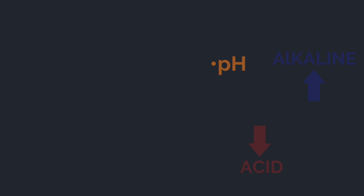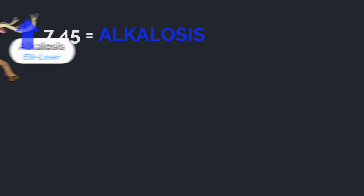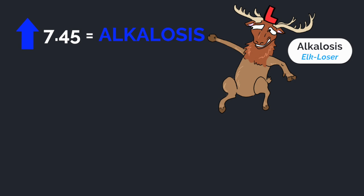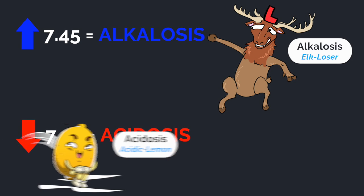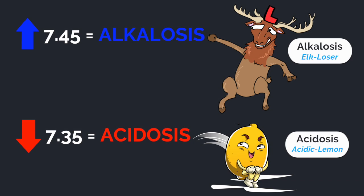If pH is up, that's alkalosis. If pH is down, or less than 7.35, that's acidosis.